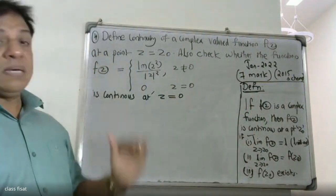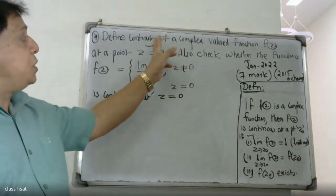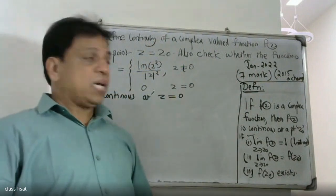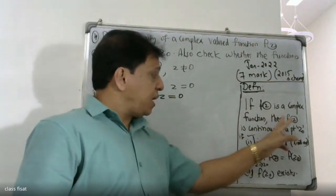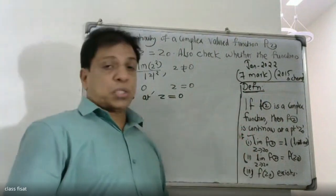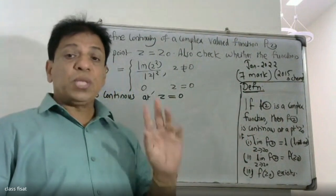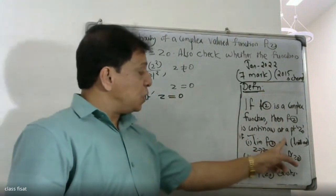For a complex function, if f of z is a complex-valued function, then f of z is continuous at a point z₀ if more conditions are satisfied. The first condition: limit as z tends to z₀ of f of z is equal to L.